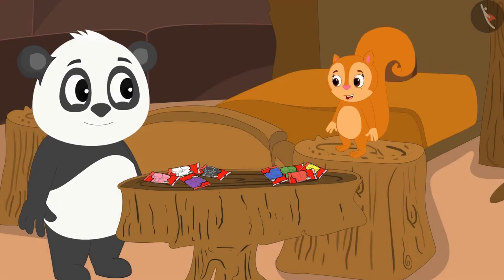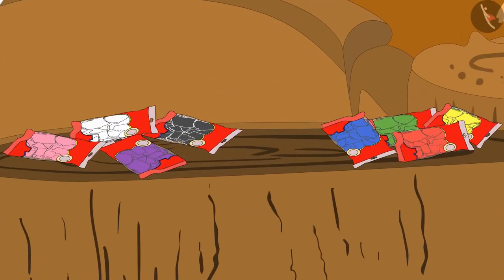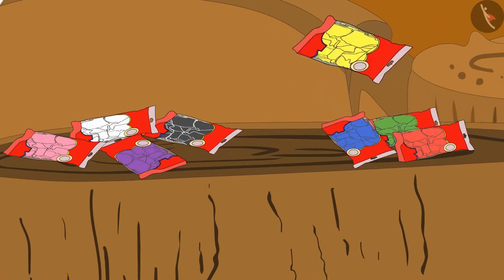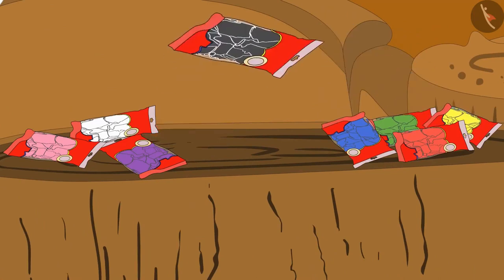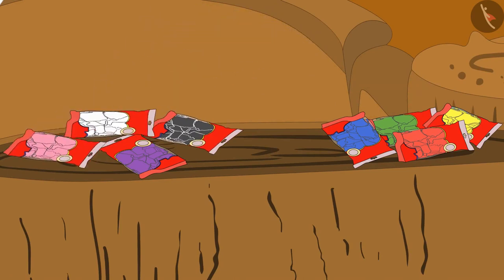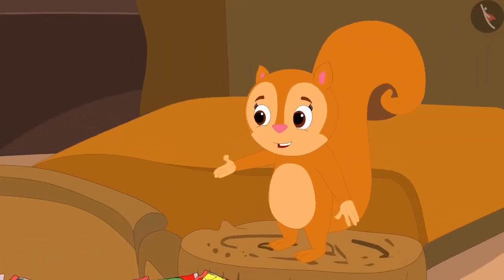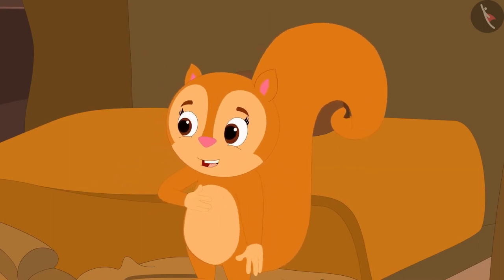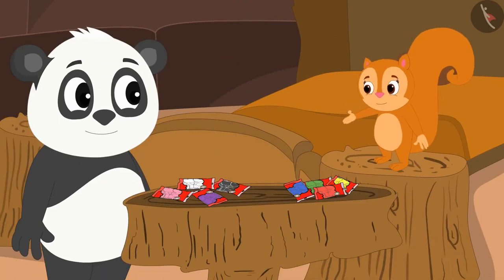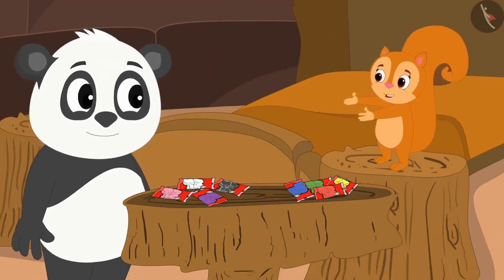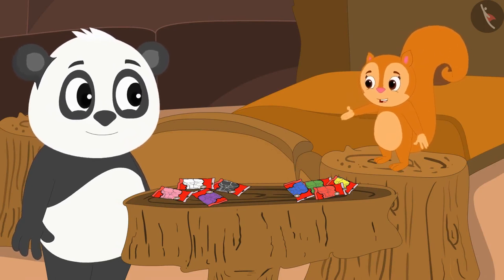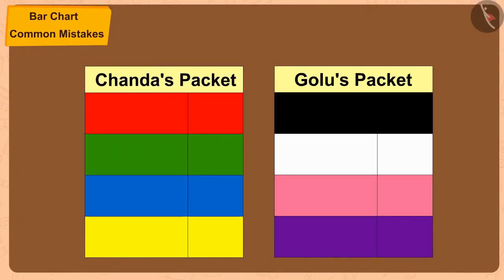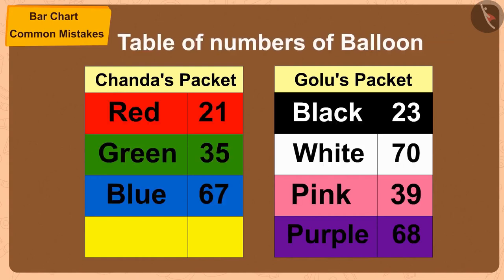Golu and Chanda bought balloons from the market for Bhola's birthday. Golu, my packet contains red, green, blue and yellow balloons. And your packet contains black, white, pink and purple balloons. You make a table of the numbers of the various balloons in your packet, and I will make a table of the balloons in my packet. In this way, we will get information about the numbers of the balloons and we will be able to make a beautiful pattern with these balloons for Bhola's birthday. Both Golu and Chanda made such tables by counting the balloons in their packets.